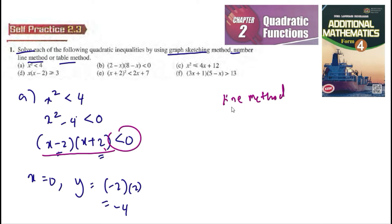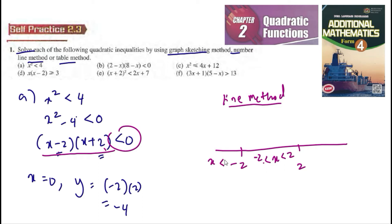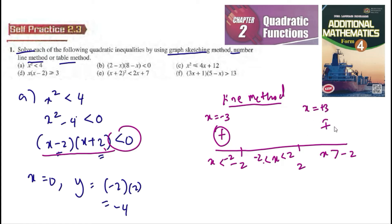Now using the number line method. We mark x equals negative 2 and x equals 2 on the number line. Testing x equals negative 3 in the region x smaller than negative 2, we get a positive value. Testing x equals 4 in the region x larger than 2, we also get a positive value. Testing x equals 0 in the middle, we get a negative value. So for y smaller than 0, x is in between negative 2 and 2.